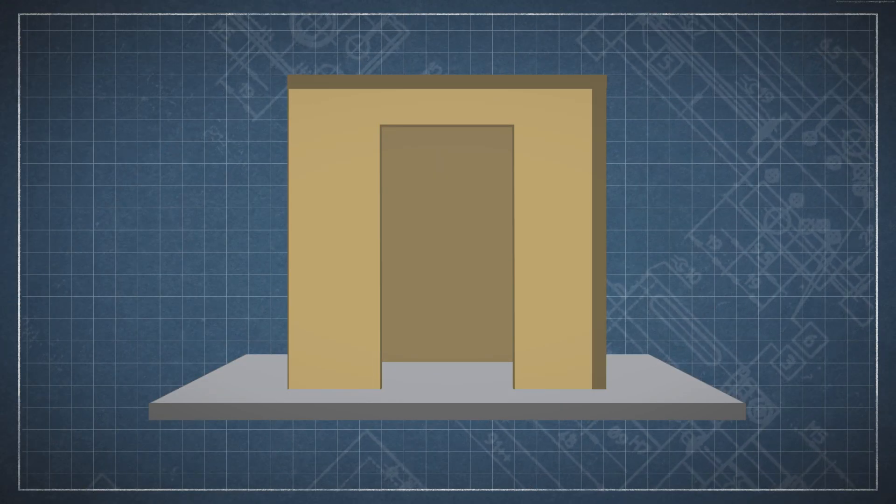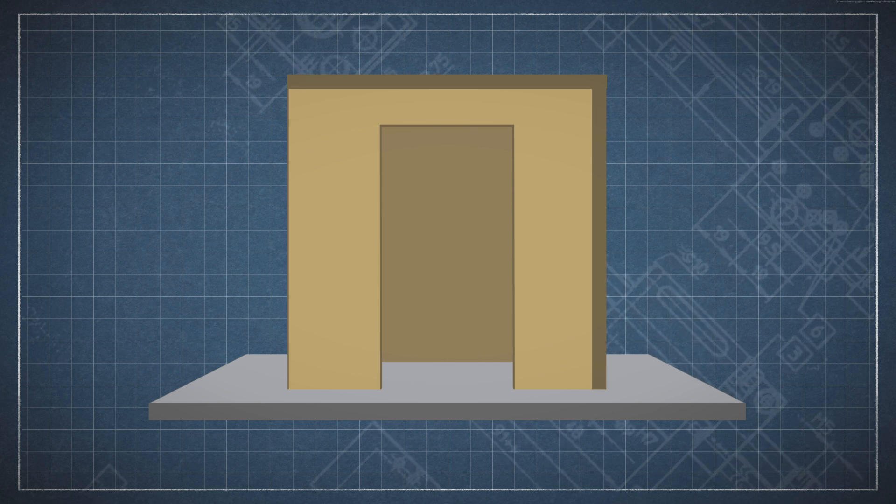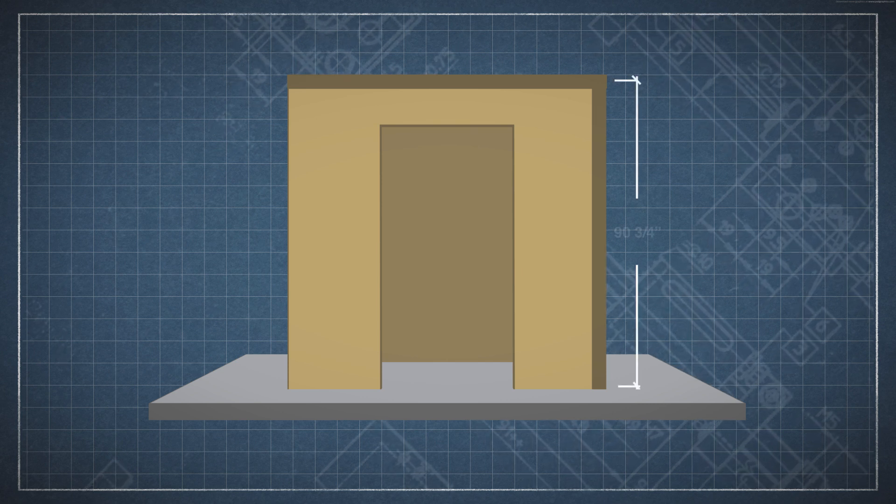The full exterior height of the room, in other words the height of the walls plus the thickness of the ceiling, is 90¾ inches.